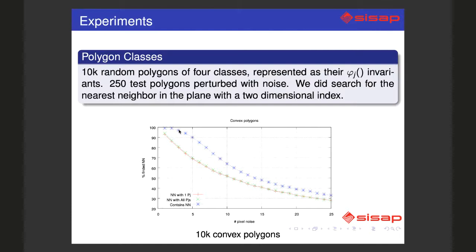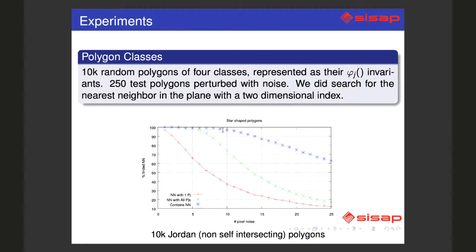But what about the star-shaped polygons? They are much more resistant to noise and we can have like seven pixels of noise here with the heuristic.